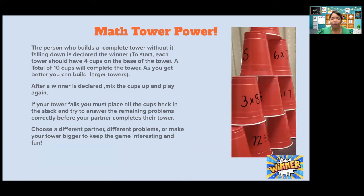The person who builds a complete tower without it falling down is declared the winner. Now to start, each tower should have four cups on the base of the tower. A total of 10 cups will complete the tower. So you're going to have four cups, then three cups, then two cups, then one cup at the top. As you get a little bit more experience with the game, or as you learn more facts, you can build larger towers.